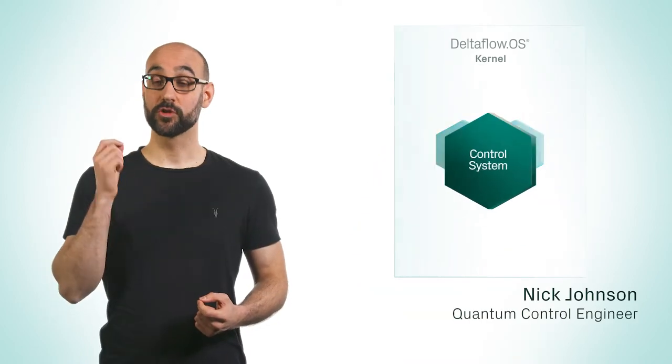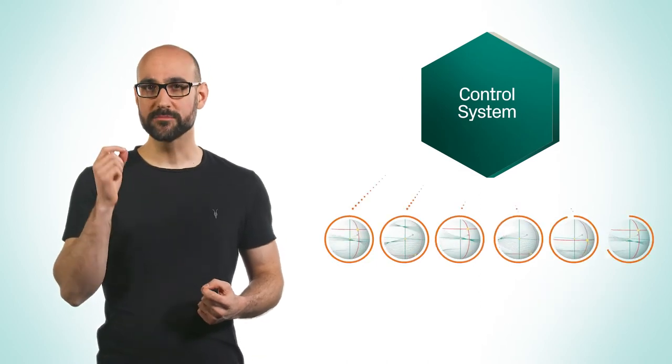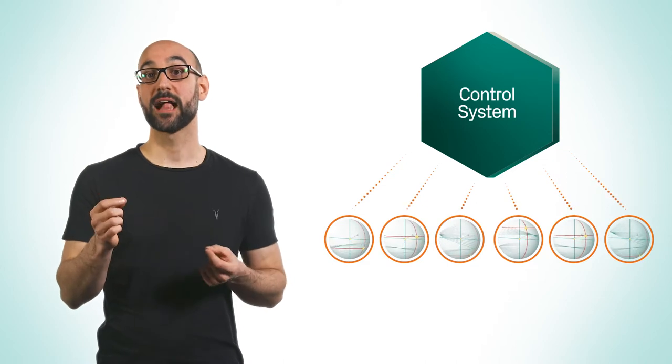The control system sits closest to the qubits. Its job is to manipulate their quantum states to store information and perform calculations.